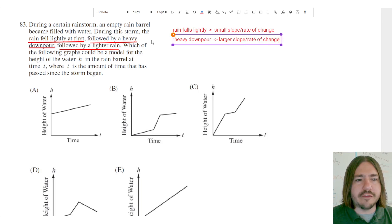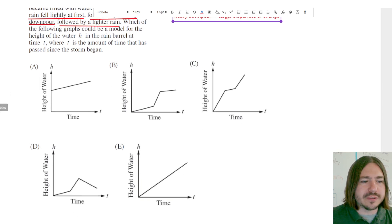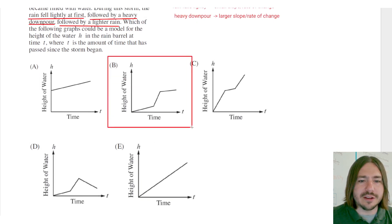And then it's followed by a lighter rain again. So we have a slight slope followed by a more extreme slope, and then we have the slow slope again. And really the only answer choice that even comes close to looking like that is going to be B here.